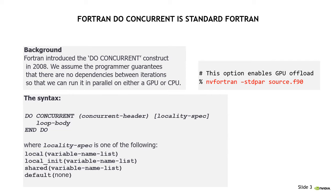Everyone is aware of what we're doing — we have people on the Fortran standards committee and it's mainly just a language thing in the language spec. But the intent of do concurrent is to say: this is a parallel loop. The iterations of this loop can run in any order, and they can run on any type of parallel hardware.